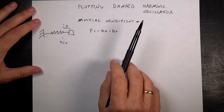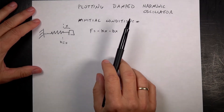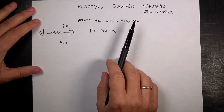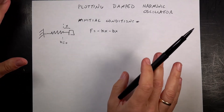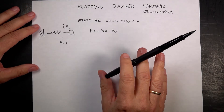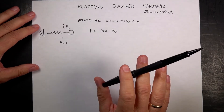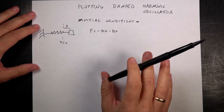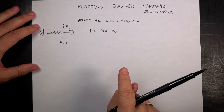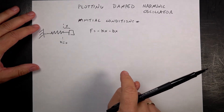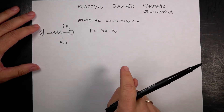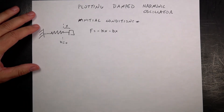I already did a video deriving the equation of motion for a damped harmonic oscillator. So let's just set up the situation — I'm not going to derive it. I'm going to show you the solution and then I want to plot it. I want to make both position versus time and phase-based plots. That's what we're going to do here.